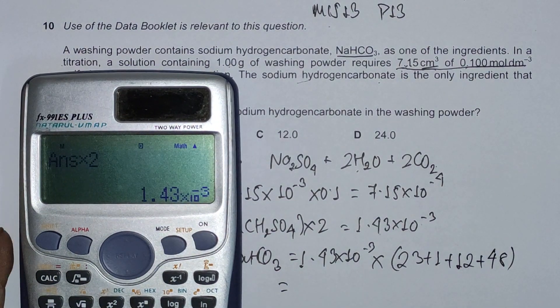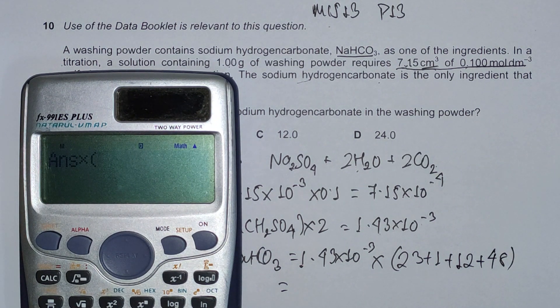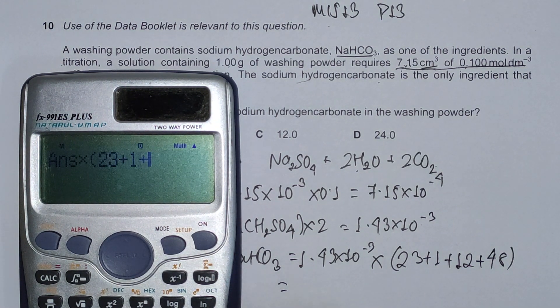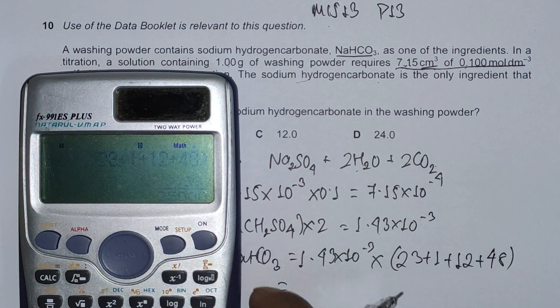This gives us 1.43 × 10⁻³ multiplied by (23 + 1 + 12 + 48), which equals 0.120 grams.